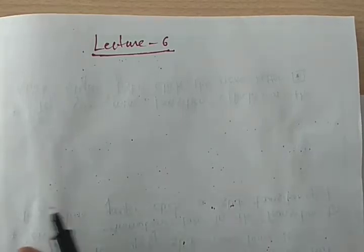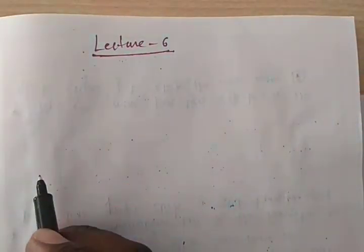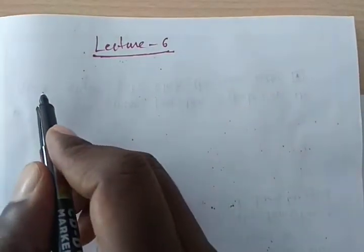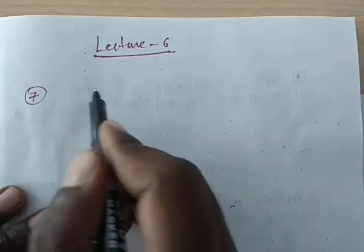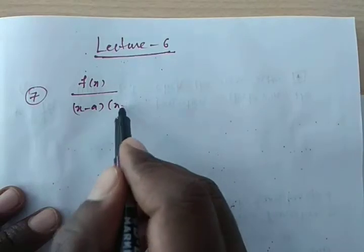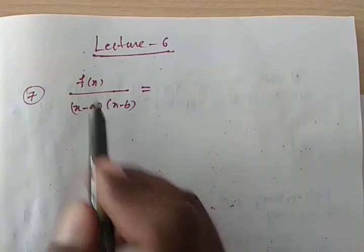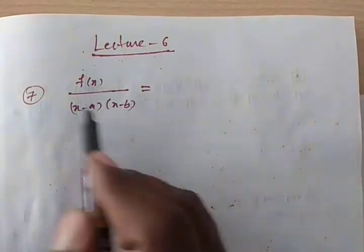Welcome to this video lecture. This is a continuation of the previous class. In lecture 5 we saw the Type 1 problem, and now I am going to give some more examples of how to divide a Type 1 problem. Suppose we have f(x) divided by (x minus a) into (x minus b). I'm writing a general proper fraction here.